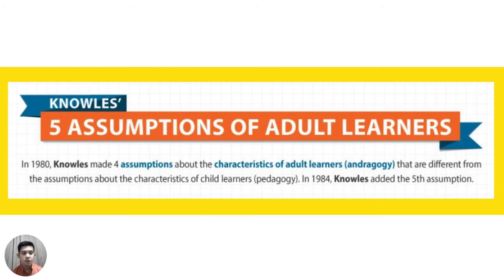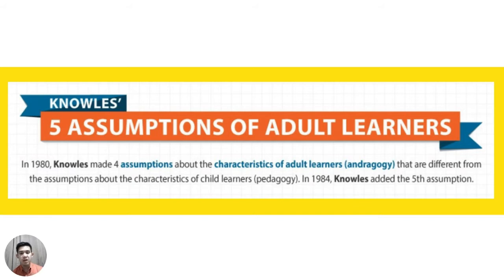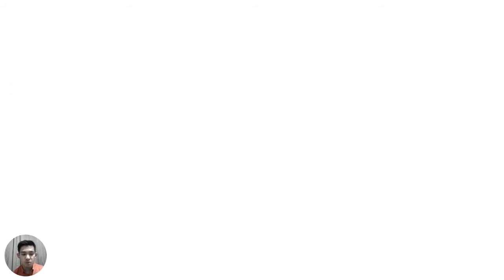We now proceed with Knowles' five assumptions of adult learners. In 1980, Knowles gave us four assumptions on the characteristics of adult learners, which became the basis for andragogy. The andragogical model was made prominent in classroom instruction for universities and different schools. In 1984, Knowles was able to add the fifth assumption.